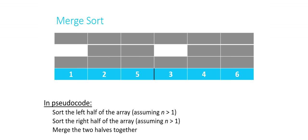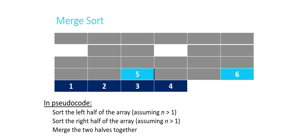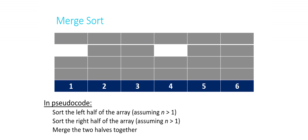At this point, for the original brick red array, we've sorted both the left half and the right half. Now the final step is to merge those two halves together. We compare element by element: 1 or 3? It's 1. Then 2 or 3? It's 2. Then 5 or 3? It's 3. Then 5 or 4? It's 4. Then 5 or 6? It's 5. Then 6 or nothing? It's 6. The sort is complete, and everything is in order: 1, 2, 3, 4, 5, 6.